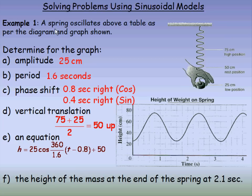To write an equation using cosine: h equals 25 cos of (360 over 1.6) times (t minus 0.8) plus 50. To recap: the 25 is the amplitude; the period is 1.6, so we use 360 over 1.6 — it's always 360 over the length of the period; the phase shift for cosine is 0.8 to the right, giving t minus 0.8; and the vertical translation is 50 up, which is why there's a plus 50 at the end.